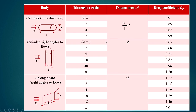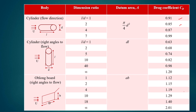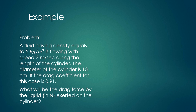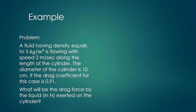For different body shapes, a table gives different dimension ratios and their respective projected areas along with drag coefficients. The drag coefficient can also be calculated from correlations developed by different investigators based on particle shape.